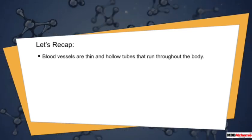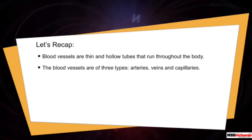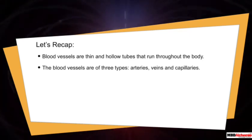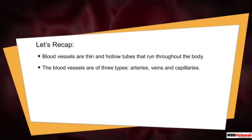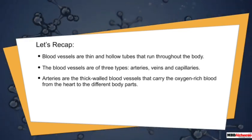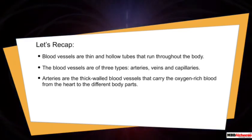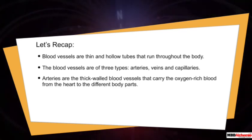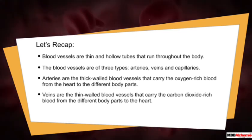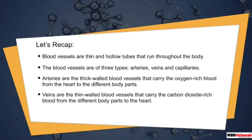Now let's recap what are blood vessels. Blood vessels are thin and hollow tubes that run throughout the body, and they are of three types: arteries, veins and capillaries. Arteries are thick-walled blood vessels that carry oxygen-rich blood from the heart to different parts of the body.